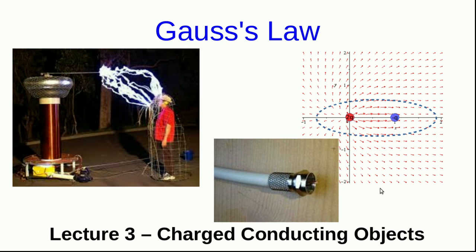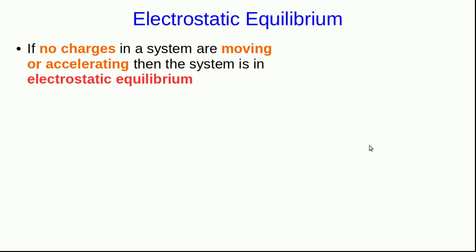Hello, and welcome to Lecture 3 of Gauss's Law in Phys 1204. In this lecture, we're going to use our informal statement of Gauss's Law to come up with some very powerful statements about how charges behave inside conducting objects. You've come across the term equilibrium in quite a few different contexts — static equilibrium, dynamic equilibrium, and chemical equilibrium. Equilibrium always refers to a situation where nothing is changing. Electrostatic equilibrium refers to a situation where a system of charges is such that none of the charges are moving or accelerating.